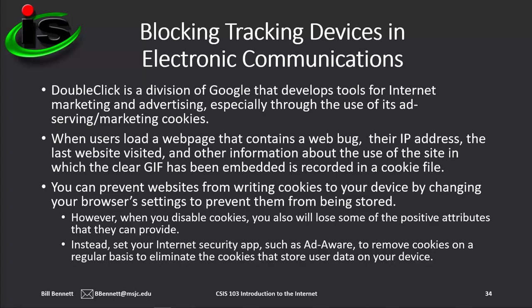Some people see this technology as an invasion of privacy because they might not want companies to know what they're shopping for. A web bug is an example of spyware because the GIF file and its actions are hidden from the user. Spyware is not illegal unless it is used as part of a criminal activity, such as gathering information to be used in identity theft. However, many people believe its use is a privacy violation or unethical. The apps you install, especially free and limited-use trial versions, might include spyware to track your use of the apps and browsing history, or collect data about you and distribute it to a third party. You can prevent websites from writing cookies to your device by changing your browser settings, but when you disable cookies, you'll also lose some of the positive attributes they can provide. By setting your internet security app or other apps such as Ad Aware to remove cookies on a regular basis, you can eliminate the cookies that store user data on your device.